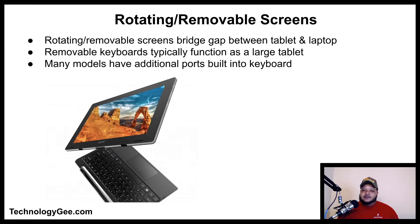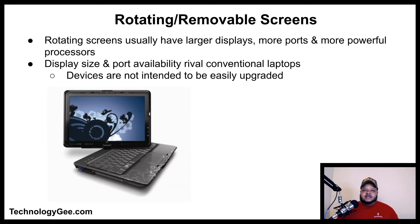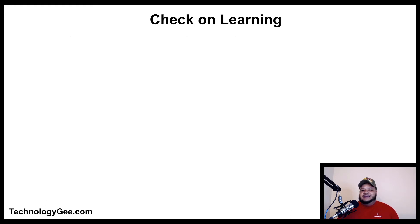Mobile devices with rotating or removable screens bridge the gap between tablet and laptop. Devices with removable keyboards typically function as a large tablet, and many models have additional ports built into the keyboard. Laptops with rotating screens usually have larger displays, more ports, and more powerful processors, rivaling conventional laptops — however, these devices are not intended to be easily upgradable.